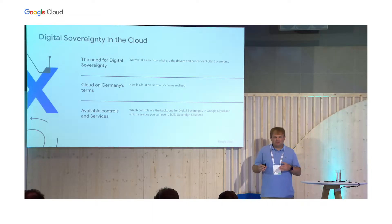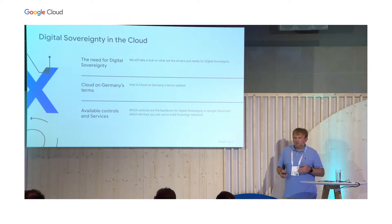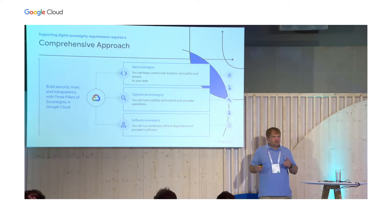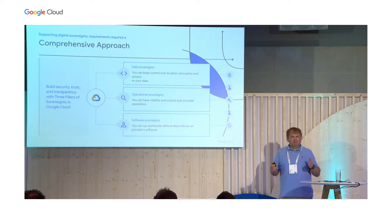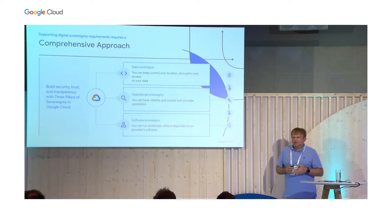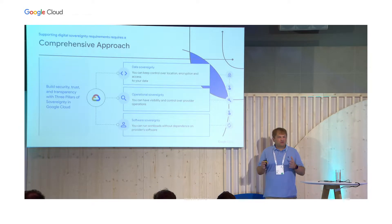Keeping these aspects in mind, we will take a look at how we have already realized cloud on Germany's terms and which controls and services are available today. Achieving digital sovereignty can mean different things to different people, but one common theme is control over your data. Data is the most important asset in the digital world, and we at Google believe having strong controls is fundamental to meeting sovereign requirements. In our mind, there are three fundamental control objectives: data residency, personal controls, and encryption control.